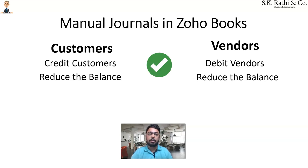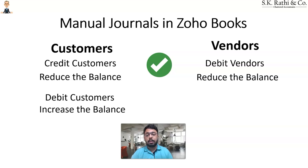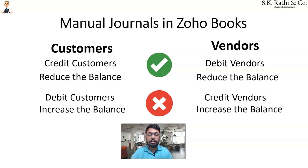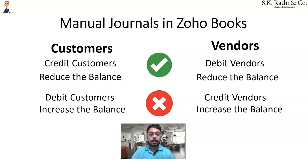The other way around — where you want to increase the balance of the customer or increase the balance of the vendor — that is a big no. Crediting the customer and debiting the vendor: possible, done, no problem. But the other way around — debiting the customer or crediting the vendor — is a big no. Let's record a similar transaction but the other way to demonstrate why.